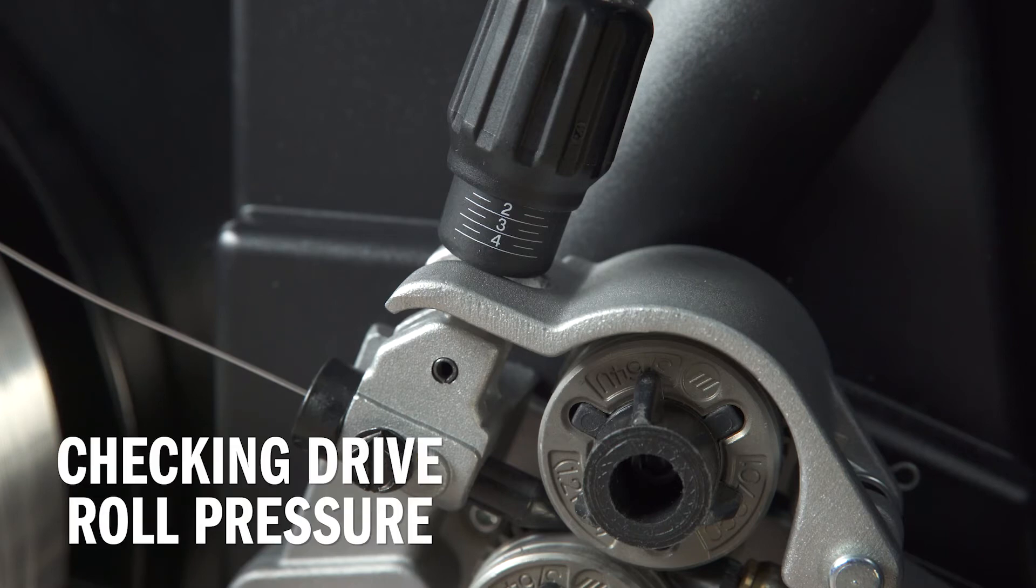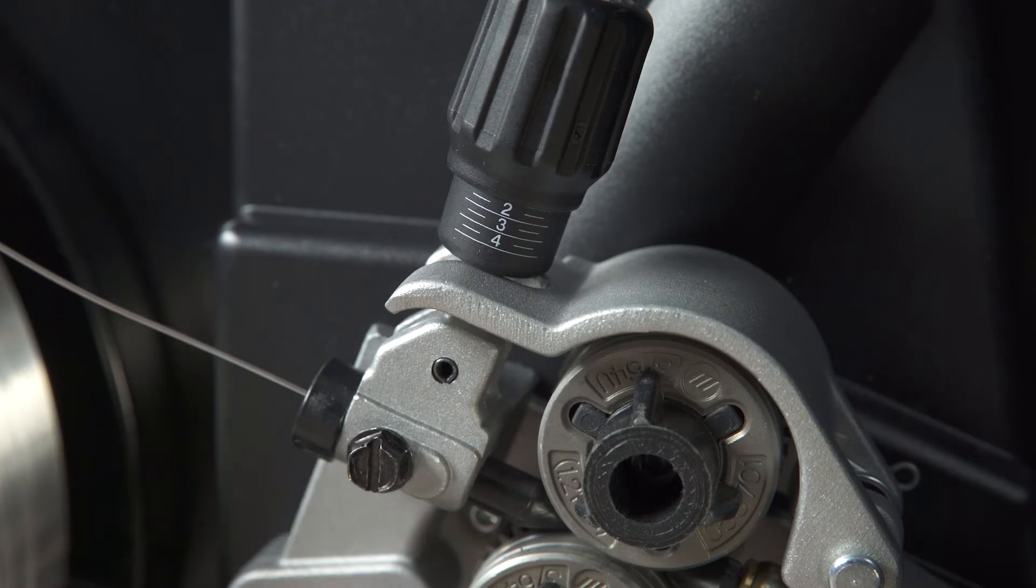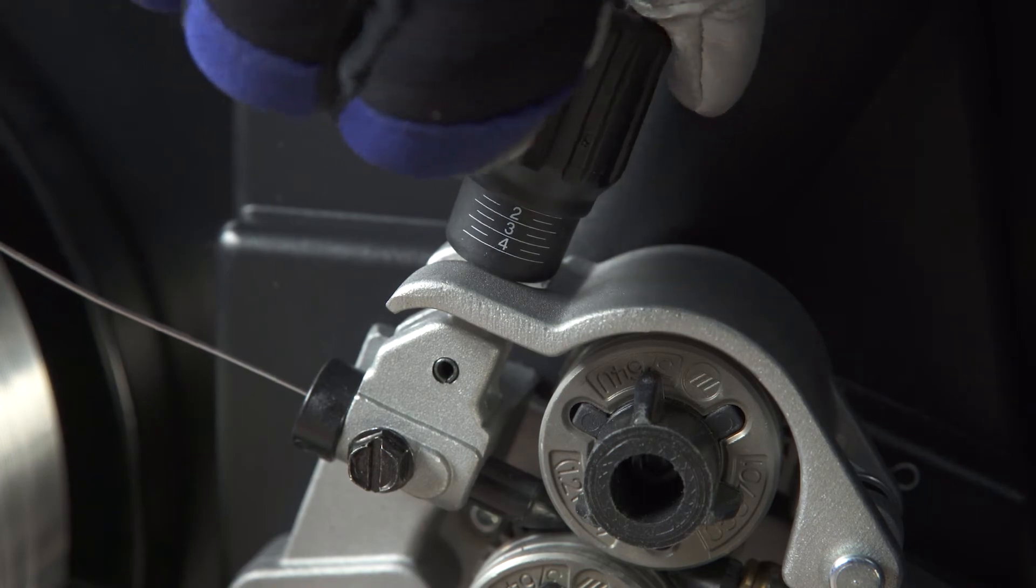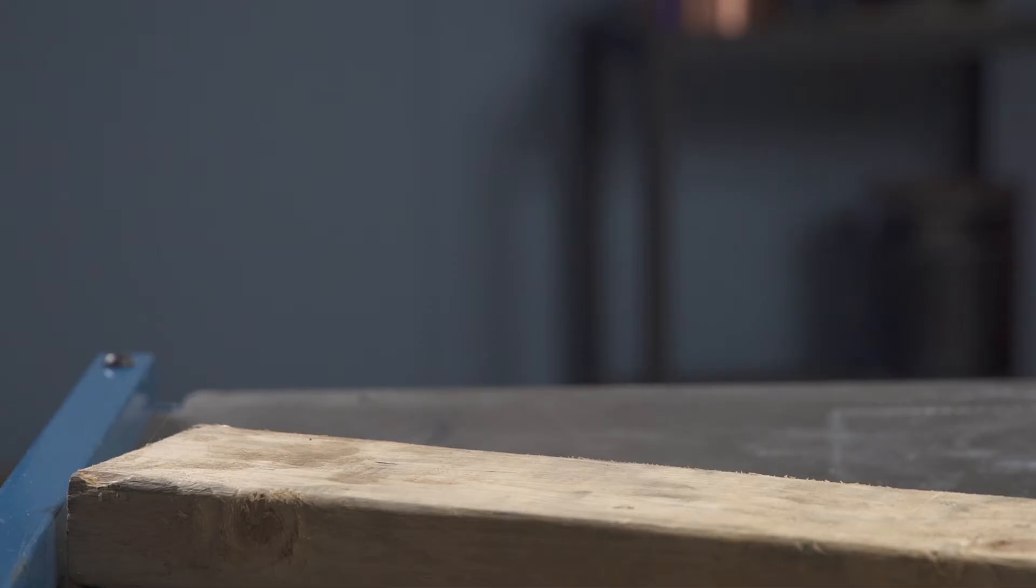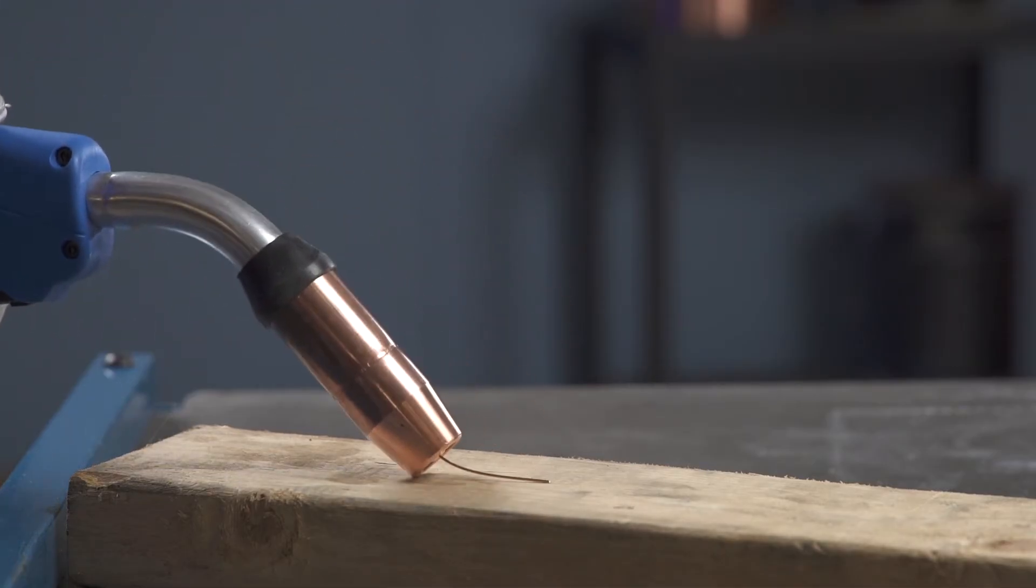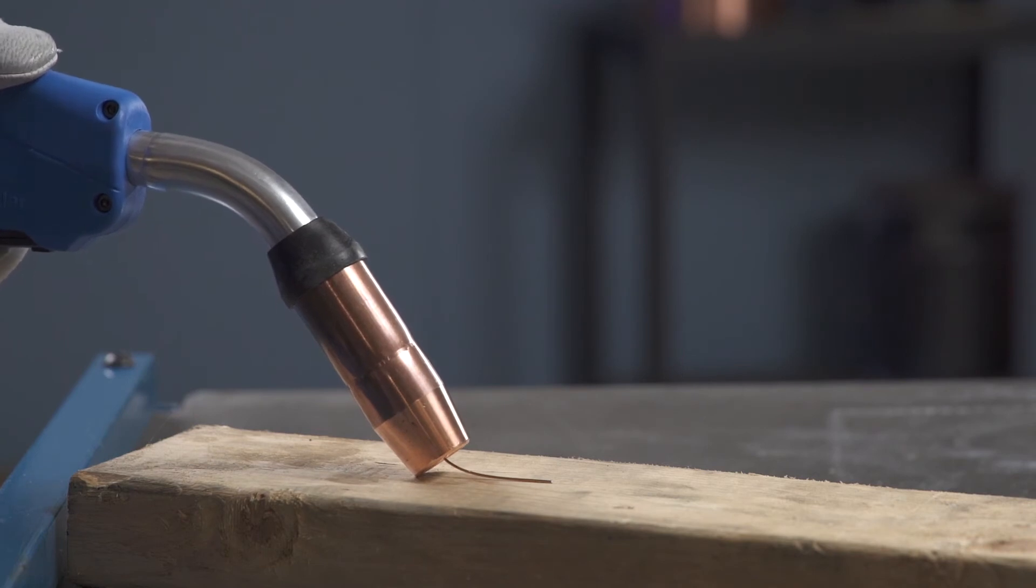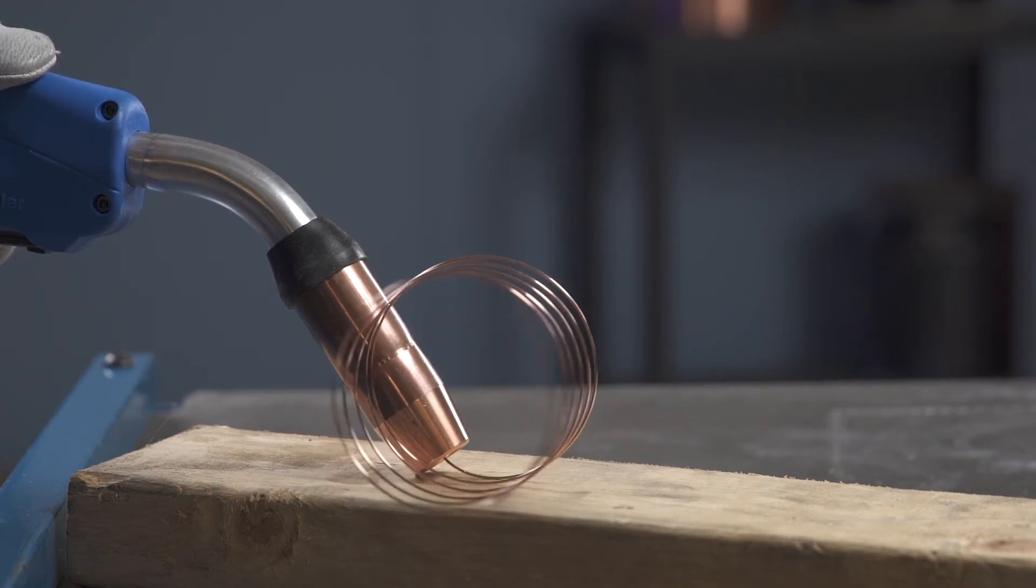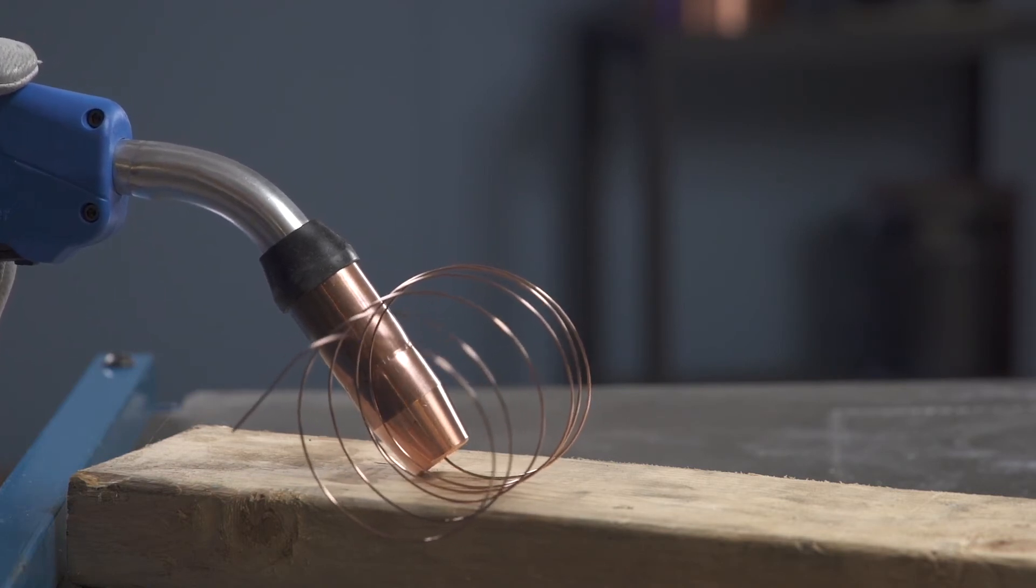Finally, check the drive roll pressure to ensure a trouble-free weld. Start with the tension set at 2. Place your gun tip over an insulated surface like this wood block and feed the wire until it feeds consistently and curls on the wood without slipping. Adjust the tension as needed. Snip the wire and close the side door.